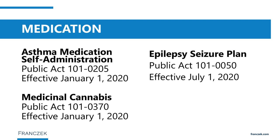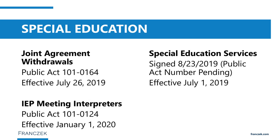Moving to special education — also a big topic with many new updates, and we'll have more on our blog. First, there are changes to the procedure to withdraw from a joint agreement. The notice must now be provided at least 12 months from the date of proposed withdrawal; it used to be 18 months.